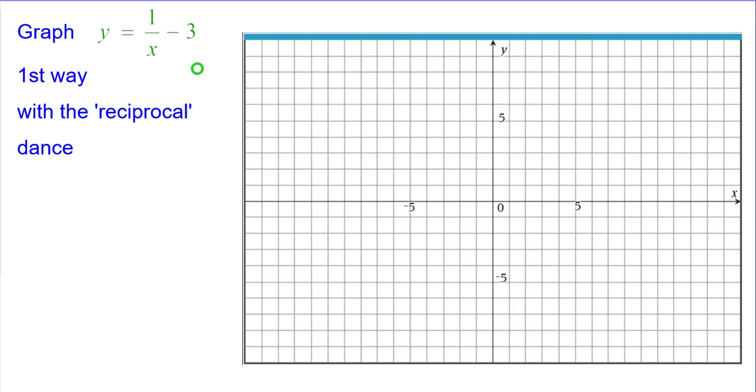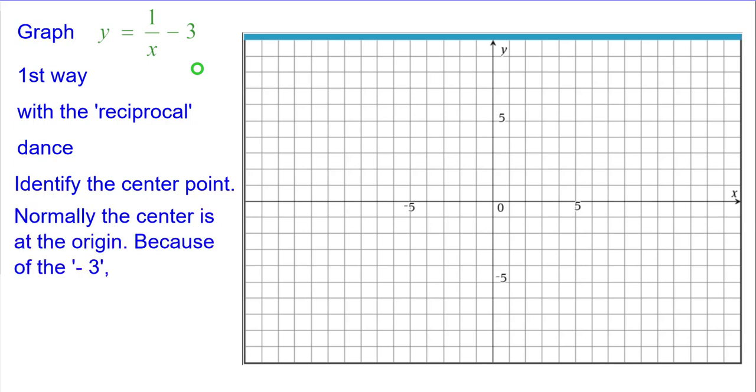The first way is we're going to use what I call the reciprocal dance. We first need to identify the center point of the graph. Normally the center is at the origin, but because of the minus 3 in the equation, we're going to have to move the center point down to (0, -3). So I'll plot that with that orange point right there.